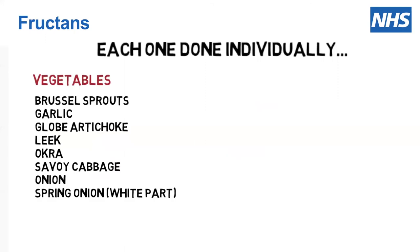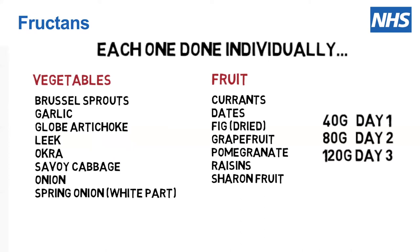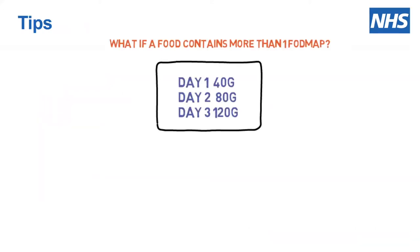There are lots of other fructans in the vegetable and fruit sections. Each of these, if you're missing them from your diet and would like to get them back in, needs to be tested individually. For each of these we suggest 40 grams on day one, 80 grams on day two, and 120 grams on day three. Use the same food for each of the three-day challenges. This same 40/80/120 gram approach also applies to any food that contains more than one FODMAP.